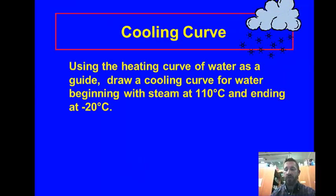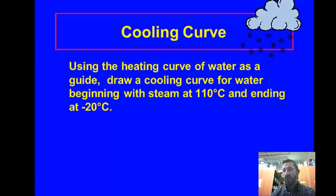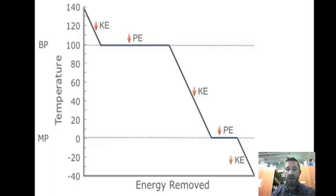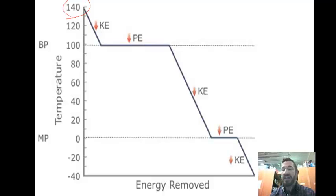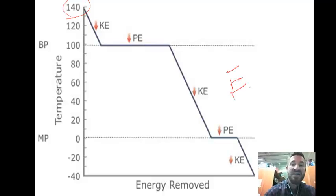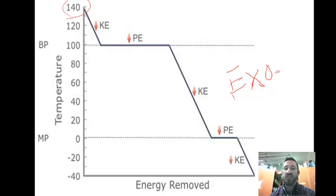So the cooling curve — the first curve had solid ice going to liquid water as we added heat, then liquid water going to vapor. Could you do the opposite? Could you go from vapor to liquid water and then to solid ice? Definitely. So we have vapor starting at 140 degrees Celsius, and we're removing kinetic energy — the molecules begin to move slower. Notice the heating curve was endothermic, which means this cooling curve is exothermic. Energy is being removed from the substance. This is not a reaction, it's a process — we're changing state.